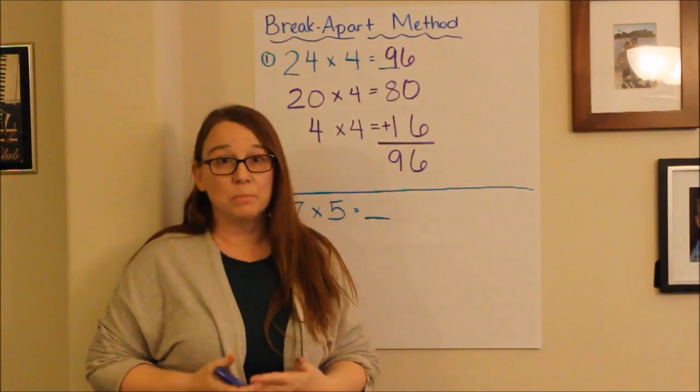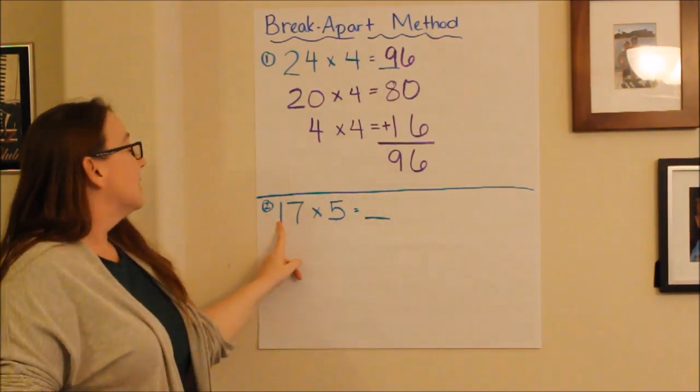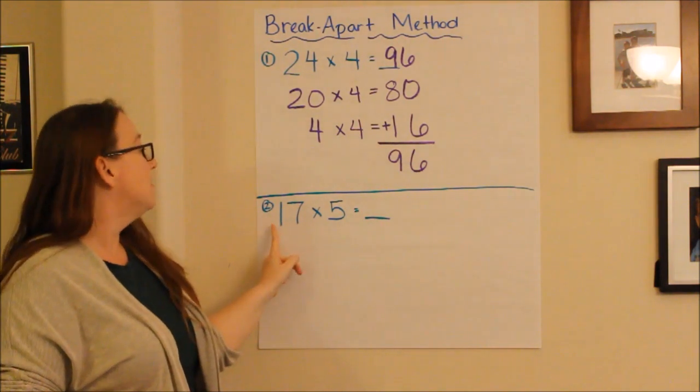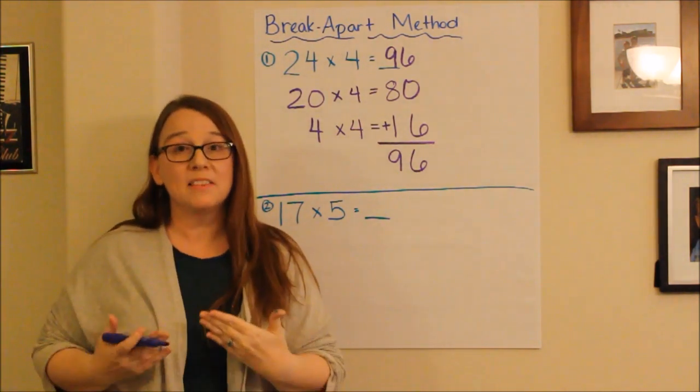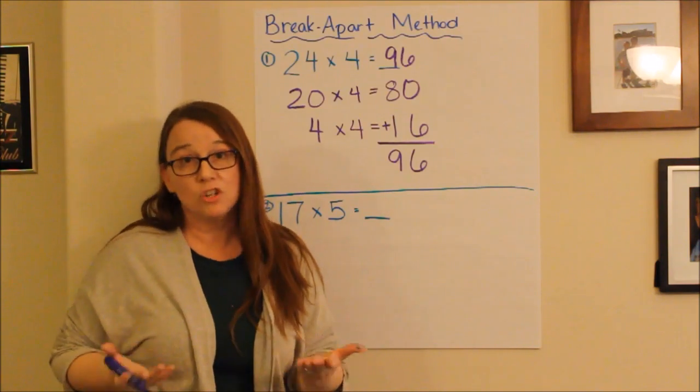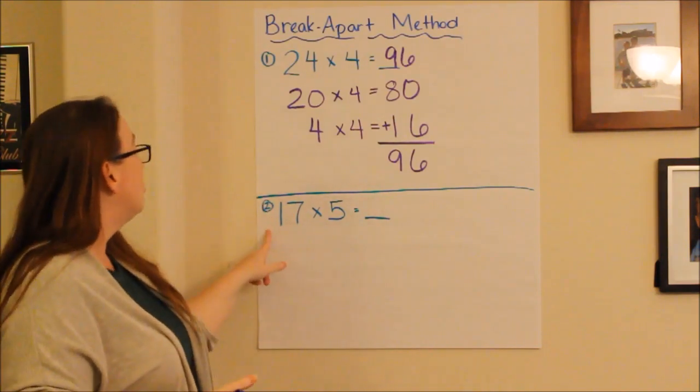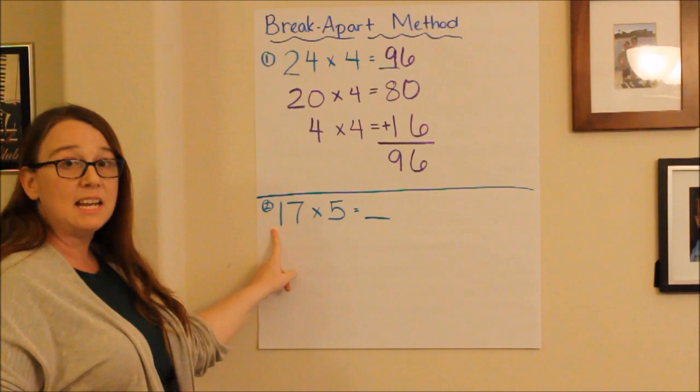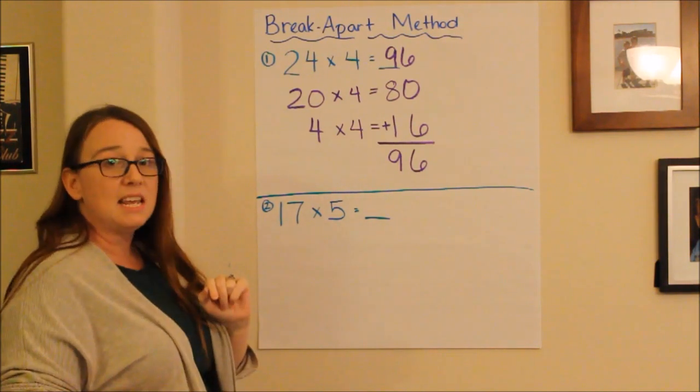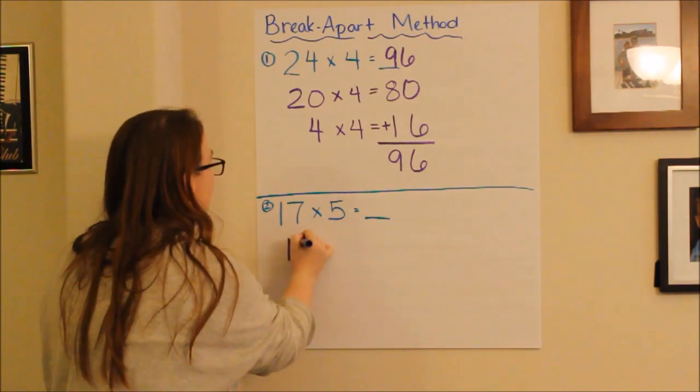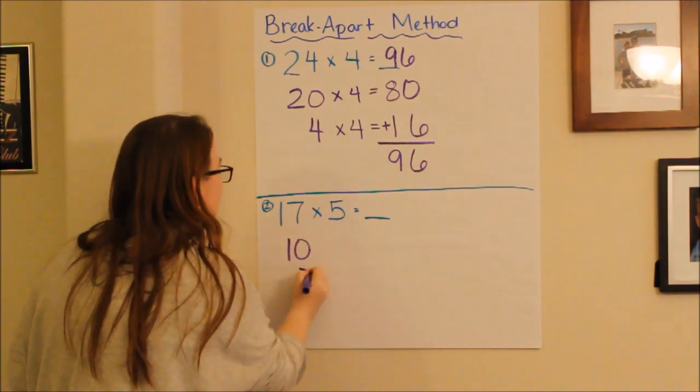Let's try another example together. Let's say I want to find the product of 17 times 5. Well, to help me to break this apart into smaller equations that are easier to do, I'm going to break apart 17 into its expanded form. So, 17 would break apart into 10 and 7.